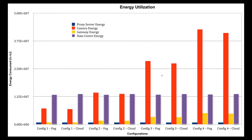Looking at the energy utilization graph, we can see that the energy consumed by the camera is very high for fog-based placement compared to cloud-based placement, whereas the proxy server and gateway consume constant energy for every configuration. For the data center, there is a minor increase in the graph after configuration two — that is, after increasing the area count to two, four, and six.